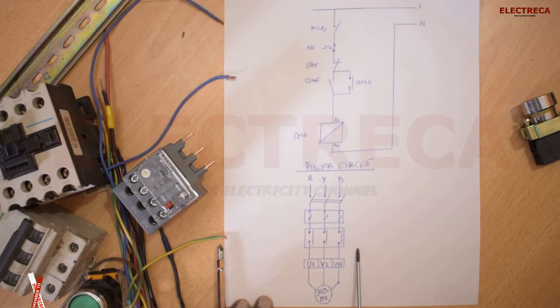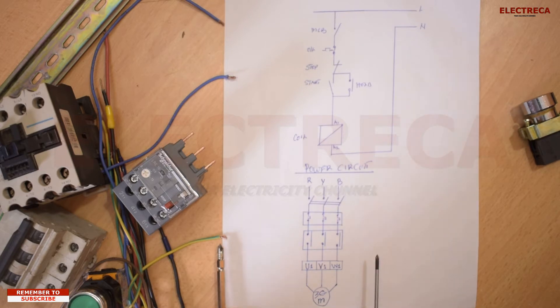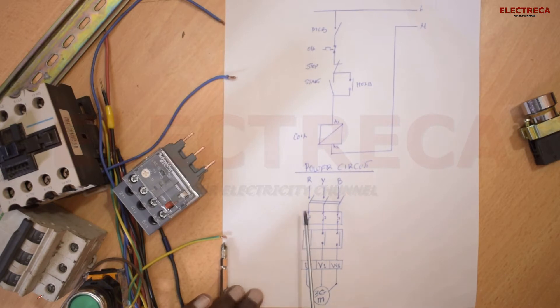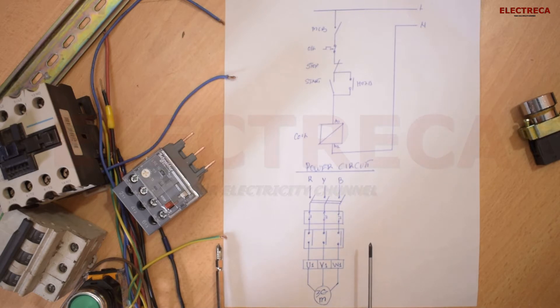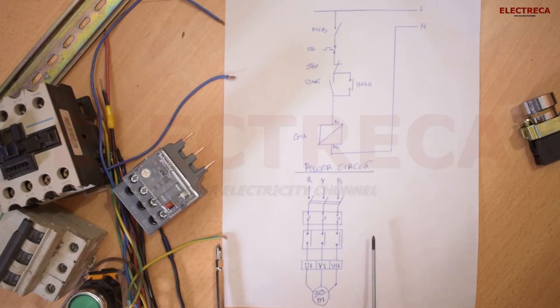Now when we come to the power circuit, the power circuit is the lines that go directly to the motor. Now you have your line here - red, yellow, and blue. Now again the sequence - it doesn't matter what colors you're using, but the sequence should always be in this respect. You go with red, yellow, blue.